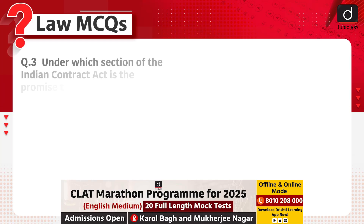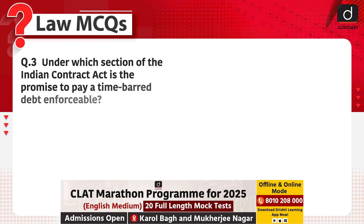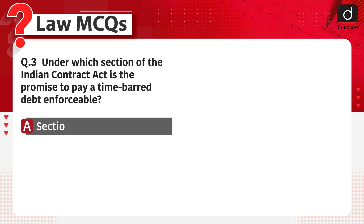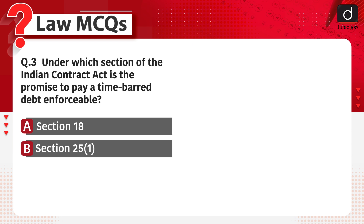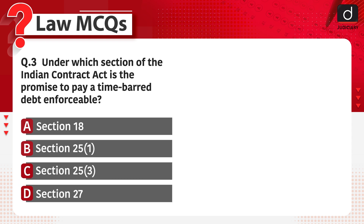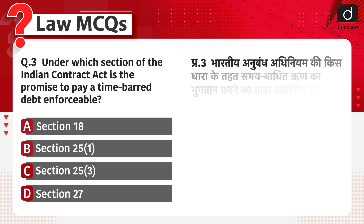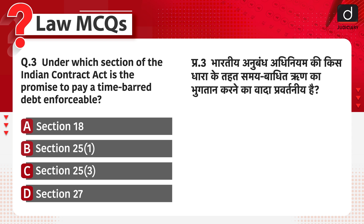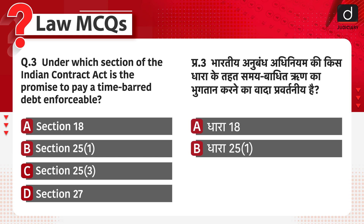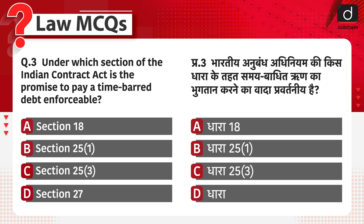Next question: under which section of the Indian Contract Act is the promise to pay a time-barred debt enforceable? Section 18, Section 25-1, Section 25-3, or Section 27? Bhartiya Anubandh Aadhiniyam ki kis dhara ke tahat samay baadit rind ka bhuktaan karne ka waada pravartaniya hai? Dhara 18, dhara 25-1, dhara 25-3, yaa phir dhara 27?